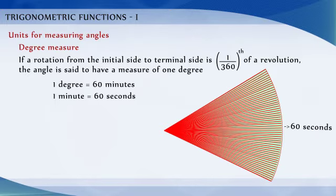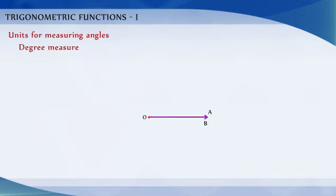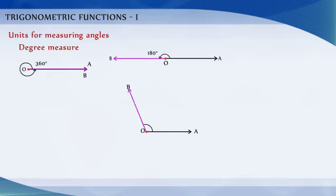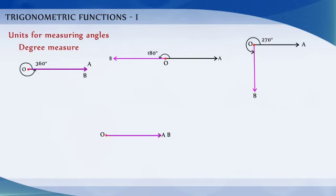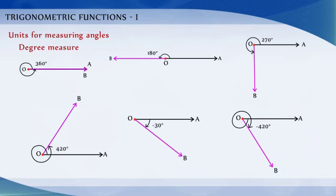Therefore, 1/60th of a degree is called a minute and 1/60th of a minute is called a second. Some of the angles whose measures are 360 degrees, 180 degrees, 270 degrees, 420 degrees, minus 30 degrees, and minus 420 degrees are given.